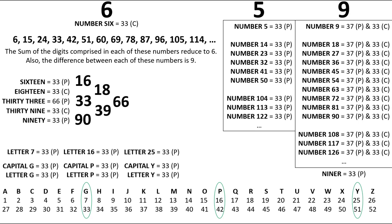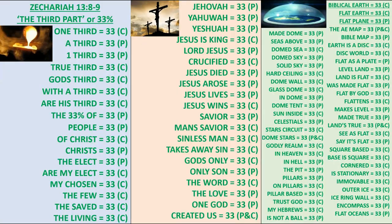In this second part of Signs and Symbols tied to the number 33, the first symbol I'm going to focus on has to do with the numerical digit 5 and its connection to the Biblical Earth. For any viewer unaware of the significance tied to the number 33, I recommend watching Part 1 of this series before continuing.